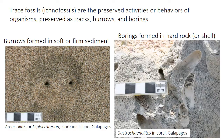Trace fossils, or ichnofossils, are tracks, trails, burrows, and borings formed by organisms — mostly animals — as they interact with the substrate. A burrow is a structure formed in soft or firm sediment, whereas borings are excavated in hard rock or in shell, as in the case of this coral here.